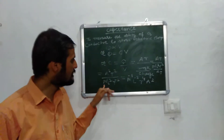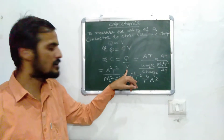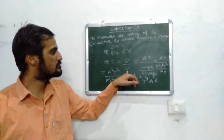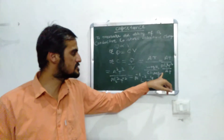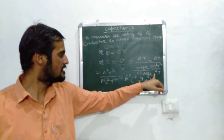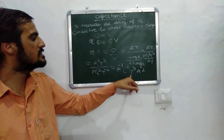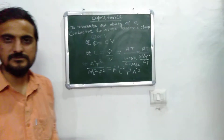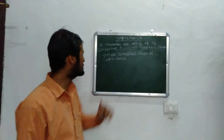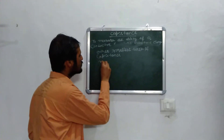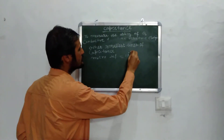To repeat: C is equal to Q upon V. The dimension formula of charge is [AT], and the dimension formula of potential difference is work upon charge. The smaller unit of capacitance includes microfarad, which equals 10 raised to the power minus 6 farad.